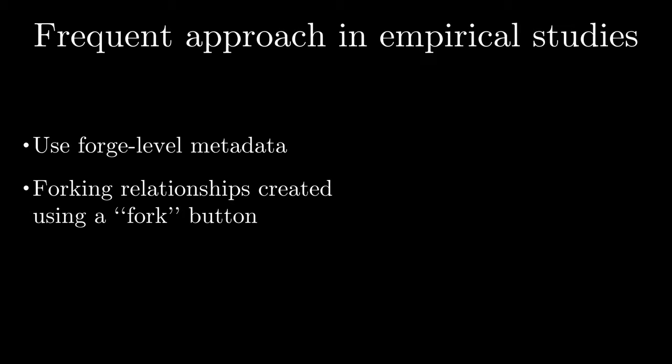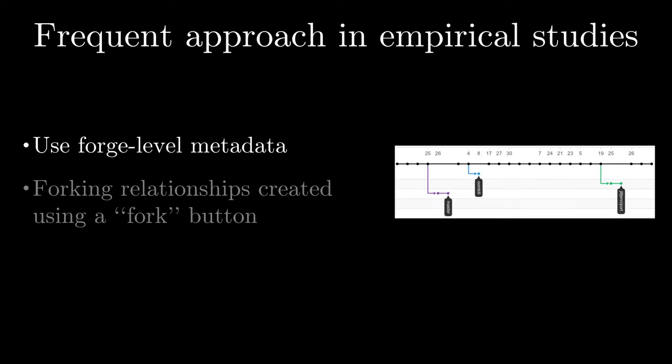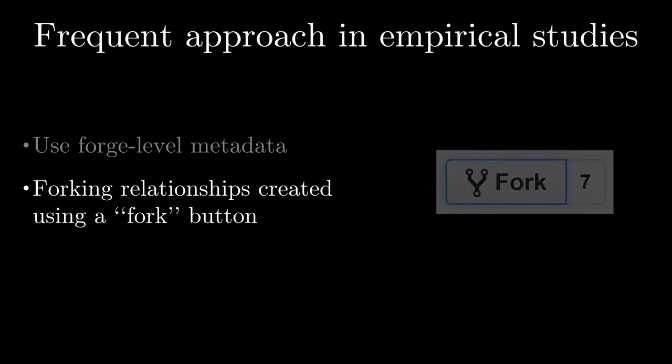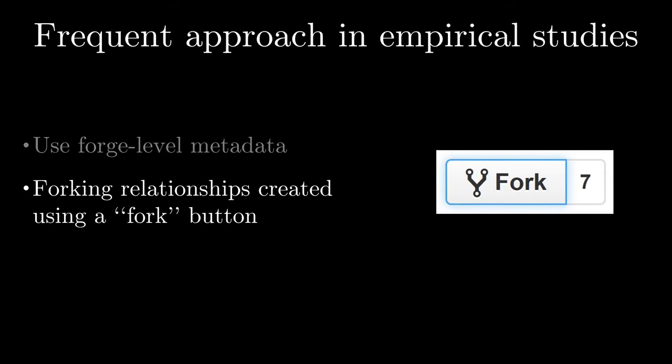Historically, it appears that the main way forks have been studied in literature is using forge-level metadata. Software forges like GitHub or GitLab provide in their API ways to get forking relationships between the repositories they host. These relationships correspond to what happens when you click on the fork button of a repository.